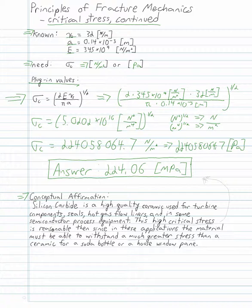We can do a conceptual affirmation. Silicon carbide is a high-quality ceramic, and it's used for turbine components, seals, hot gas flow liners, and some semiconductor process equipment. This high critical stress that we got, it's reasonable. Since in these applications,